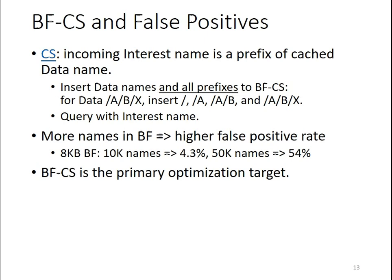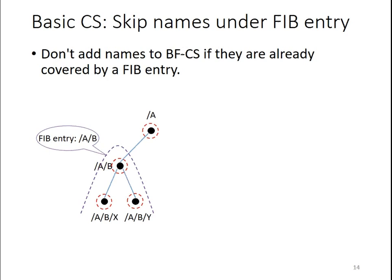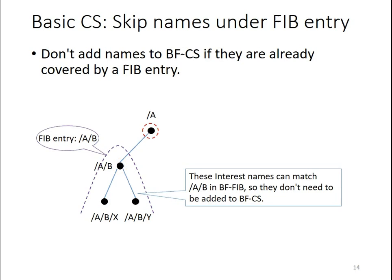We propose two novel optimizations to reduce false positives in BFCS. The first is called basic CS. In a name hierarchy with ABX and ABY in the content store, if there is already a FIB entry at AB with a corresponding BFFIB prefix, then every interest starting with AB will already be admitted. So AB, ABX, and ABY are already covered, and we don't need to insert them into BFCS again, which slightly reduces the BFCS false positive rate.